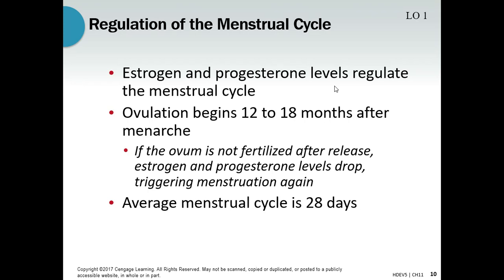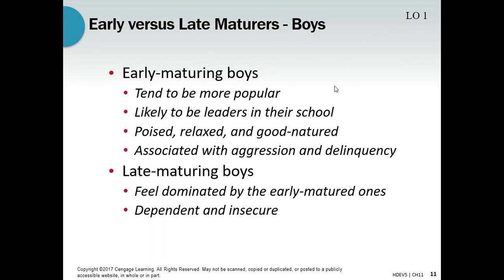Around 12 to 18 months after a girl begins menstruation, she will actually start ovulating. If you read old mythology, you might find stories of a girl who was considered barren and then the gods made her have a child — and then she goes on to have many more children. What was really happening was that the girl was having her period but not ovulating, so she wasn't getting pregnant. Once she started ovulating, it appeared as if the gods had finally favored her, and sure enough she kept having children — because she was in fact a fertile young woman all along.